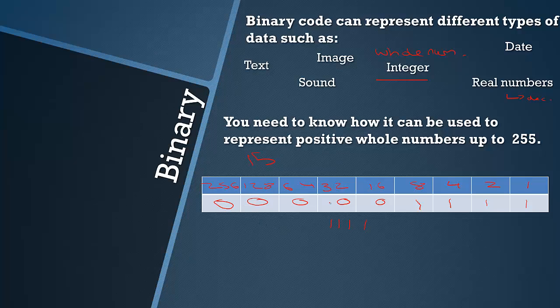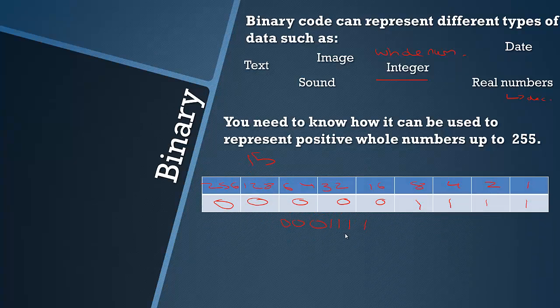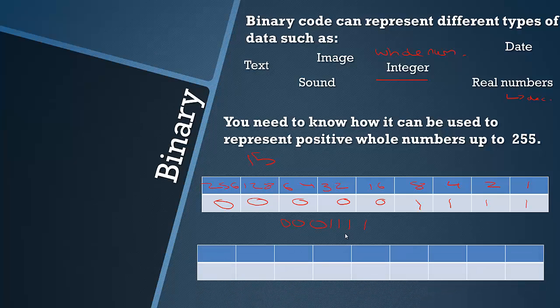You can leave out any trailing zeros. For example, if the question asks you to represent it as a byte, you would make sure it's got 8 bits in it. So this is 4 bits, obviously a nibble.